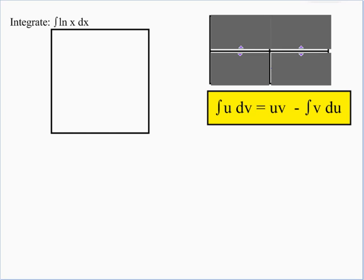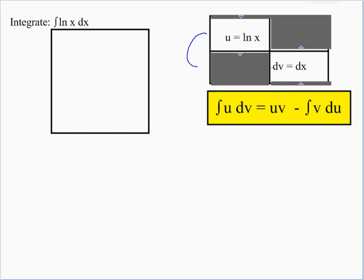Our only choice is natural log of x for u — if we tried to put it in the dv spot to integrate it, we don't know how to integrate natural log of x, so that wouldn't work. So we let u equal the natural log of x, which means dv equals dx. To get du we differentiate, and to get v we integrate. The differential of natural log is 1 over x dx, or dx over x. The integral of dv equals dx gives v equal to x.